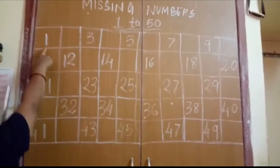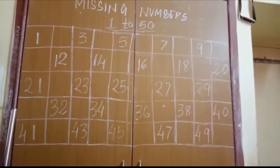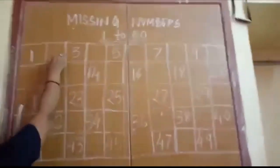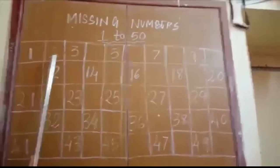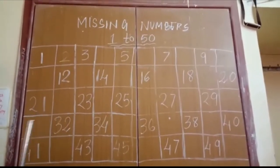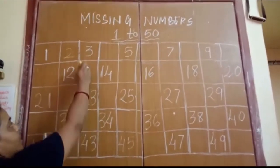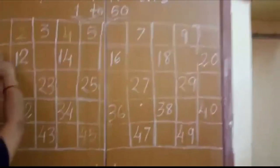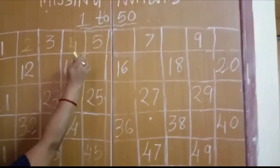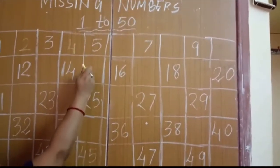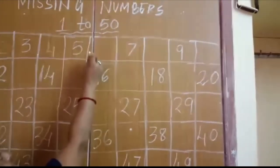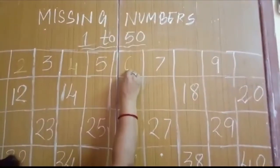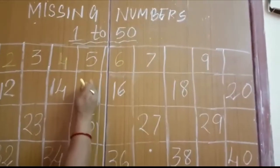This is 1. So what number will come after 1? 1, 2, 3, 4. What number will come after 5? Students, think — after 5 what number will come? Yes, 6 will come after 5.